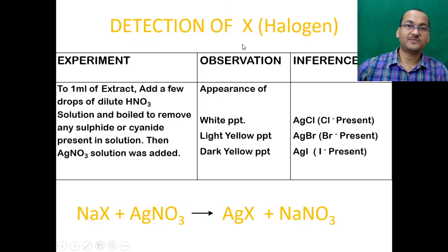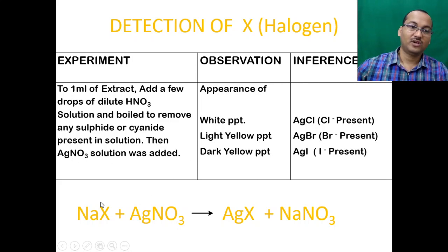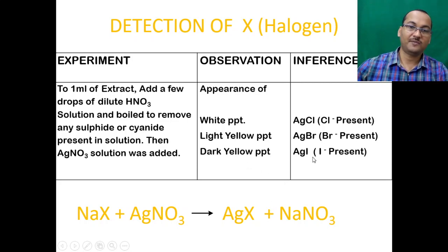For detection of halogens, take 2 ml of extract, add a few drops of dilute nitric acid solution, and boil it to remove any excess sulfide or cyanide. Then add silver nitrate solution. The sodium halide in the Lassaigne extract reacts with silver nitrate giving silver halide. AgCl gives a white precipitate, AgBr gives a light yellow precipitate, and AgI gives a dark yellow precipitate.